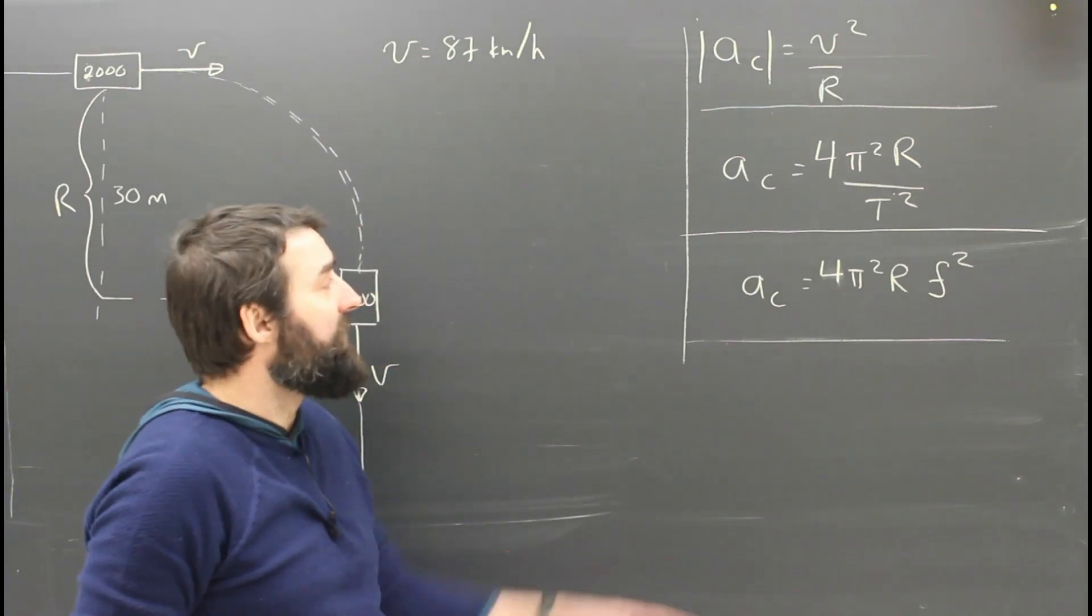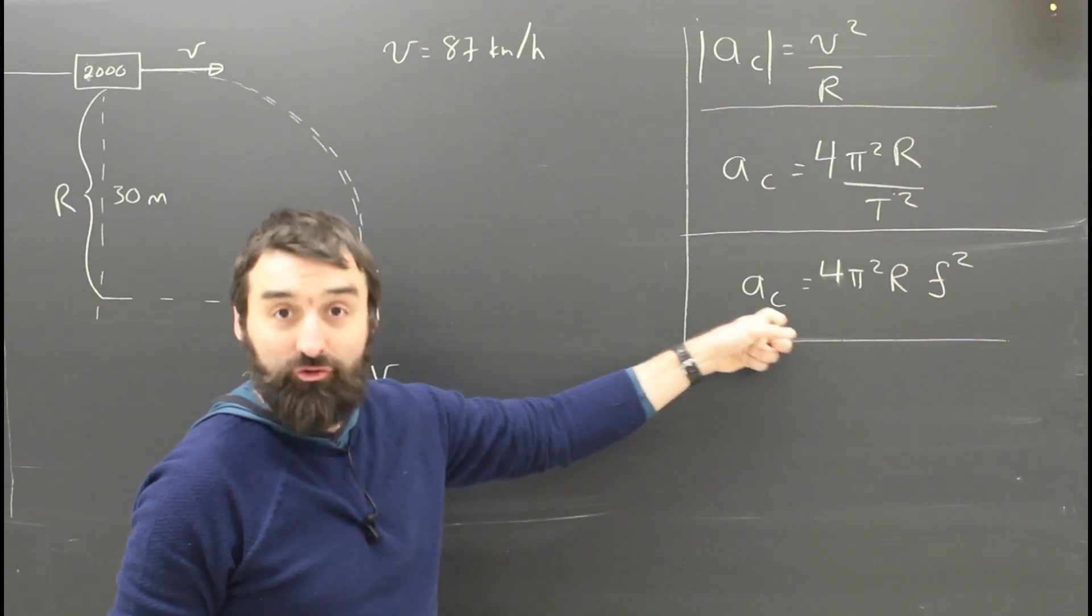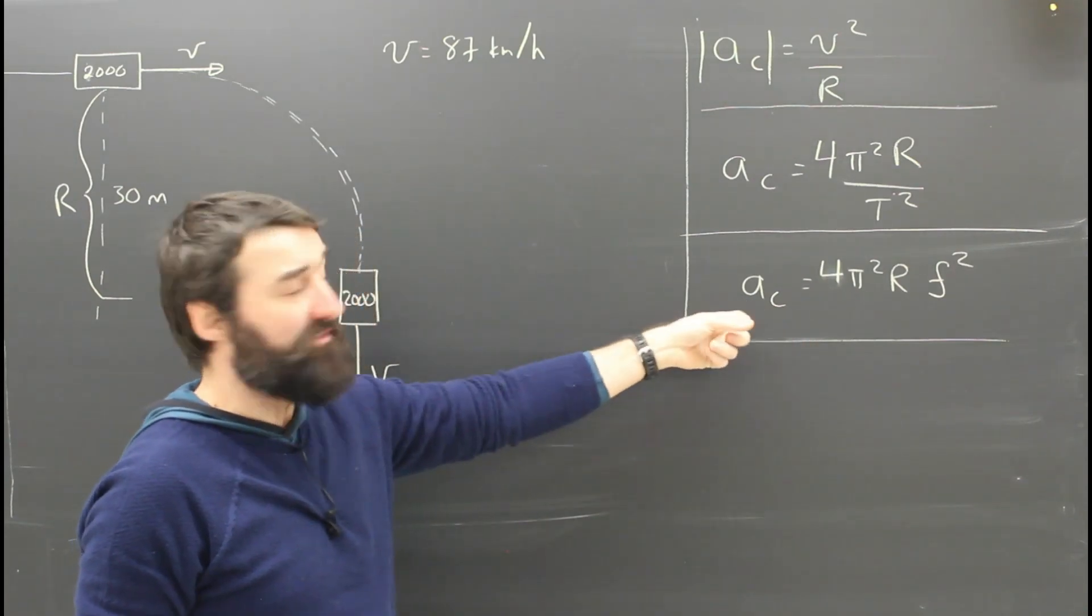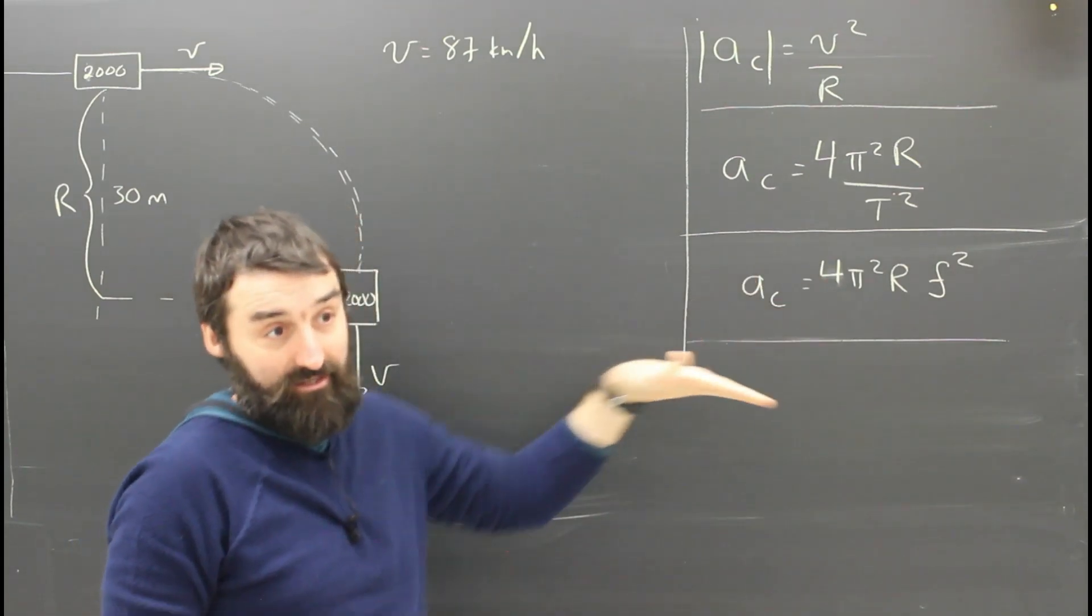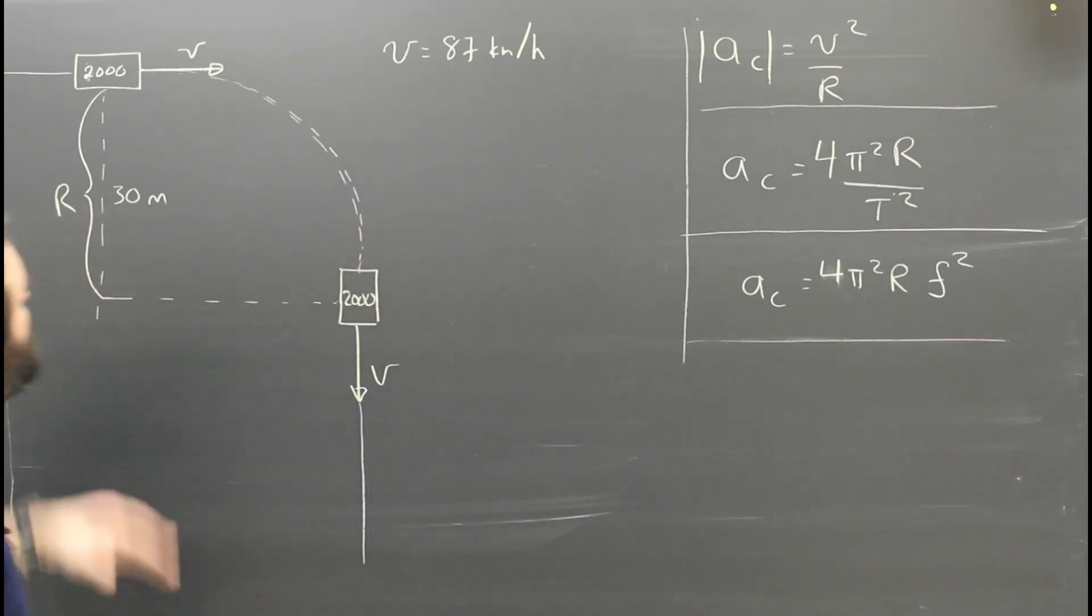So we can still use the AC formula. You can think of this as centripetal acceleration, but you can think of it as circular acceleration or acceleration in a curve. So I need to know the radius of curvature of the curve. Let's say it's 30 meters.